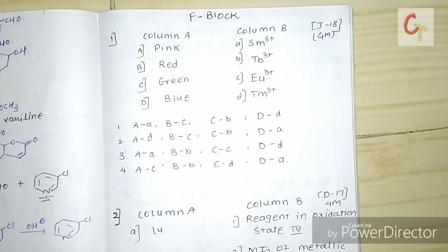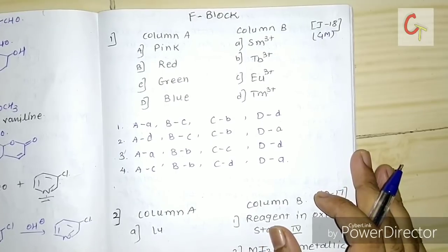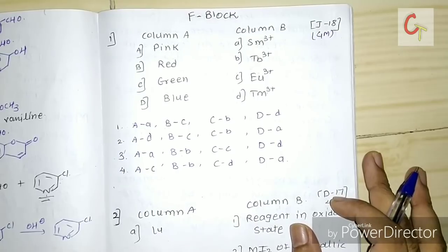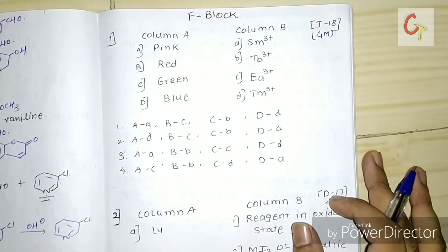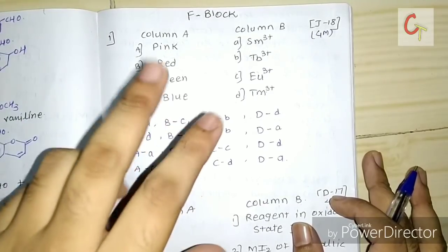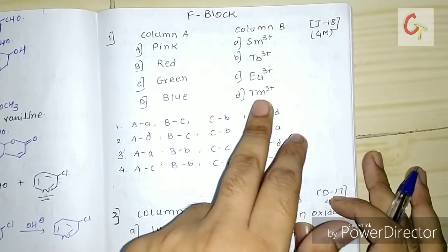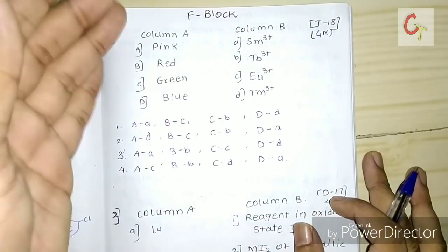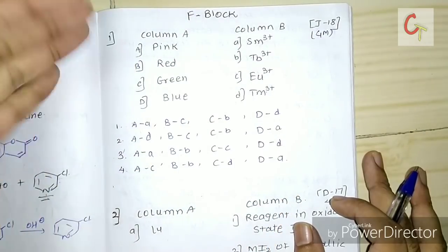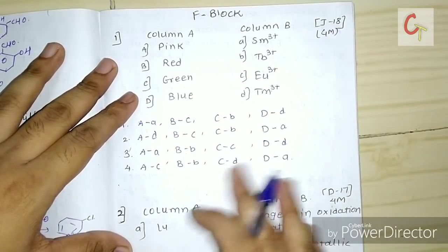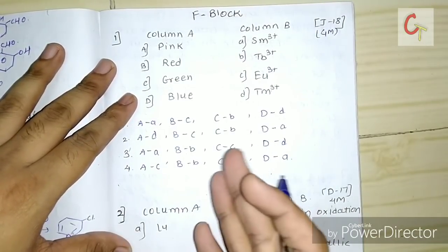Hello friends, today we are going to see some previous CSIR NET questions which come from the topic of f-block elements. This is the first question which came in the July 2018 exam, carrying 4 marks. There are metals given in column A and colors given in column B; you have to find which metal gives which color. It is a memory-based question — there is no logic we can apply.